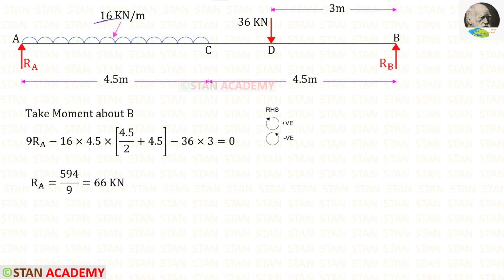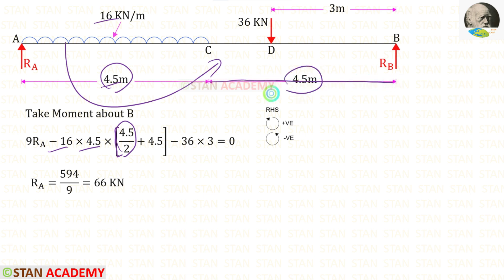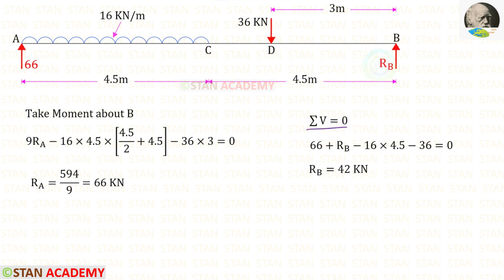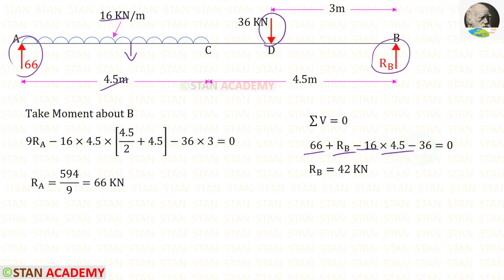The uniformly distributed load is acting in the anticlockwise direction so it will be negative. The distance is 4.5; we divide the distance by 2 and add the remaining distance of 4.5. The point load is acting in the anticlockwise direction so it will be negative, and the distance is 3. For RA we get 66. Applying sigma V = 0: RA and RB are upward (positive), UDL and point load are downward (negative). For RB we get 42.